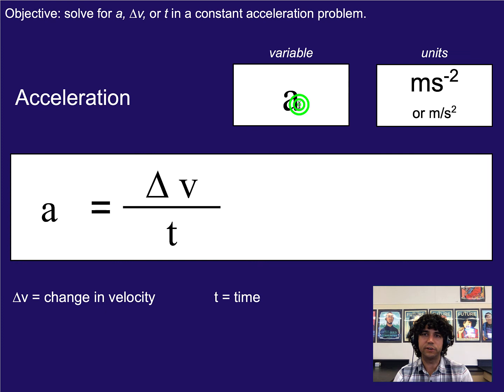The variable for acceleration is a for acceleration. The units are meters per second squared is how you would say this. You can write it as m times s to the negative two, or you can write it as m over s squared, both mean the same thing. And the way we get that is you think about it as the units of velocity are meters per second, the units of time are seconds. So we'd have a meter per second divided by second, which would give us a meter per second squared.